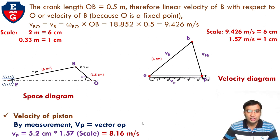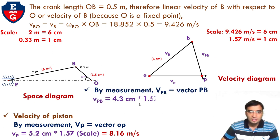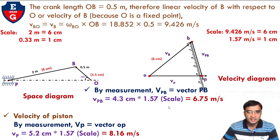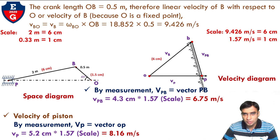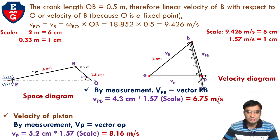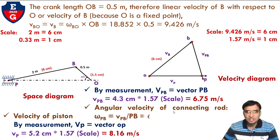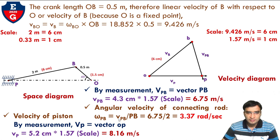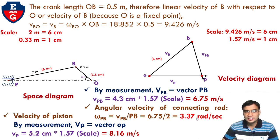Next, find the angular velocity of the connecting rod. Measure vector bp: it equals 4.3 cm. So VPB = 4.3 × 1.57 = 6.75 m/s. The angular velocity of the connecting rod is omega_PB = VPB / PB = 6.75 / 2 = 3.37 rad/s.